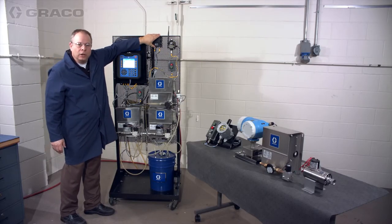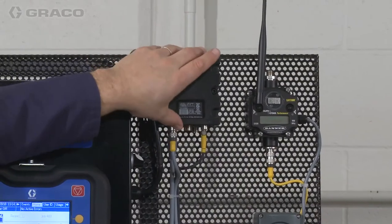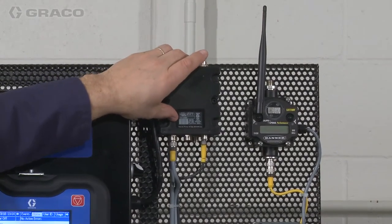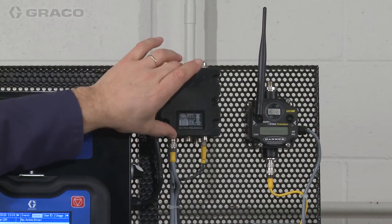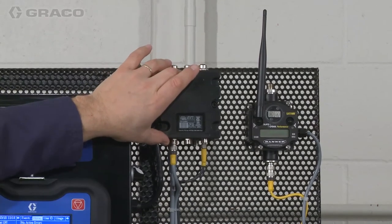Over on the right here you'll see a little black box, and that's the FCM, or Fluid Control Module. Depending on how many fluid panels you have is going to determine the amount of FCMs.